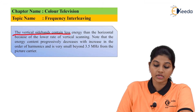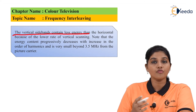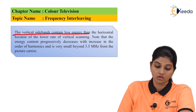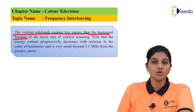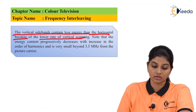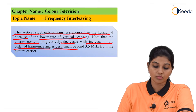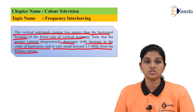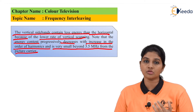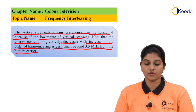The vertical sideband contains less energy compared to the horizontal scanning band because of the lower frequency rate of vertical scanning. The energy content decreases with increasing order of harmonics and becomes very small beyond 3.5 MHz from the picture carrier.